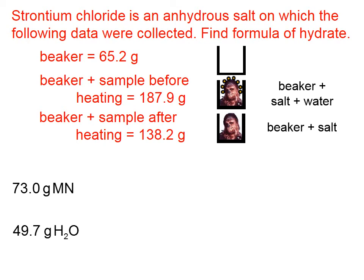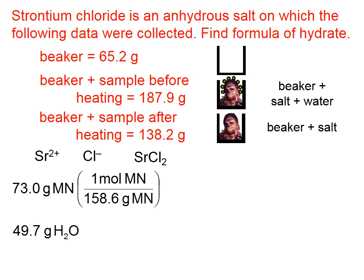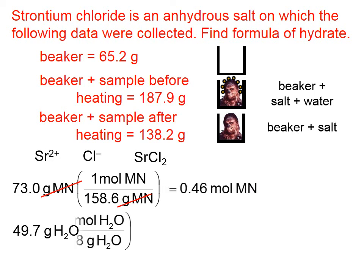Step two: convert each of those grams into moles. We're told the salt is strontium chloride. From the periodic table, strontium as an ion has a 2+ charge and chloride is 1−, so the formula is SrCl₂, giving a molar mass of 158.6 g/mol. Dividing 73.0 grams by 158.6 g/mol — notice the gram units cancel — gives us the number of moles of salt.